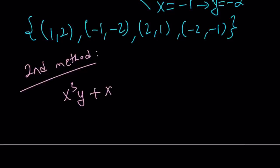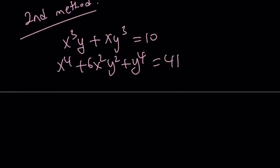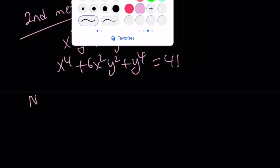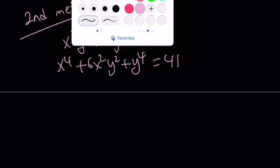x³y + xy³ = 10, and x⁴ + 6x²y² + y⁴ = 41. Now, this should look familiar to you from a binomial theorem perspective. If you dealt with binomial theorem before, you should definitely know this. So I want you to notice...